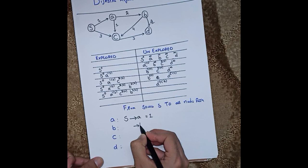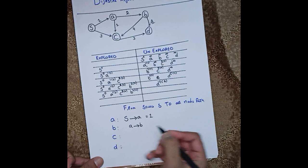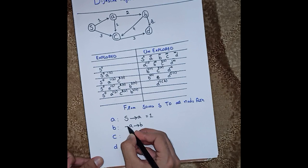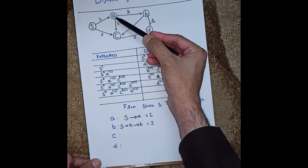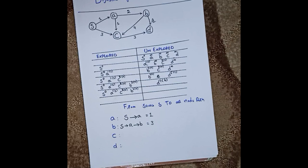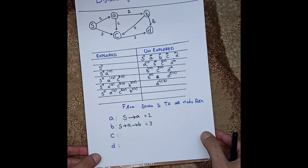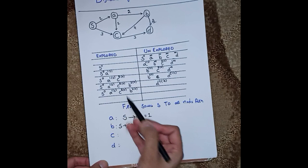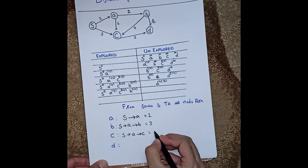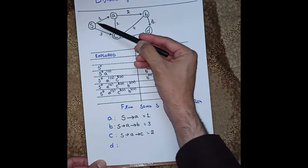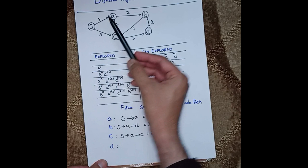To reach C: C's parent is A and A's parent is S, so the shortest path is S → A → C with overall distance 2. We could also go S → C directly with weight 3, but S → A → C gives distance 2, which is shorter. So S → A → C is the shortest path to C.